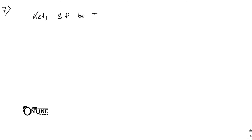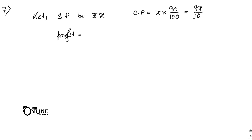Sum number seven: the cost price of an article is 90% of its selling price. Find the profit percentage. Let SP be rupees x. Then CP equals 90% of x, which is 90 by 100 into x, equals 9x by 10. Since SP equals x and CP equals 9x/10, profit equals x minus 9x/10, which equals x/10.